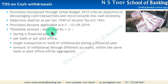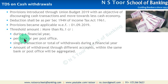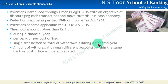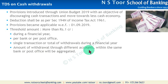यह कुछ important rules हैं. जब हम देखेंगे के threshold amount more than 1 crore में क्या-क्या include होगा - one, यह more than 1 crore हमने देखना है during a financial year. Second, it could be per bank or per post office - it means अगर किसी customer के एक से ज्यादा बैंकों में account है तो हर bank में उसको more than 1 crore रुपीज तक यह TDS का application बनेगा. This more than 1 crore withdrawal can be a single transaction or it could be total of withdrawals during the financial year. और जब हम इनका aggregation करेंगे तो वो person wise करेंगे - amount of withdrawal through different accounts within the same bank or post office will be aggregated, so अगर एक person के एक से ज्यादा accounts हैं तो उनको aggregate कर लिया जाएगा within the same bank or within the same post office.